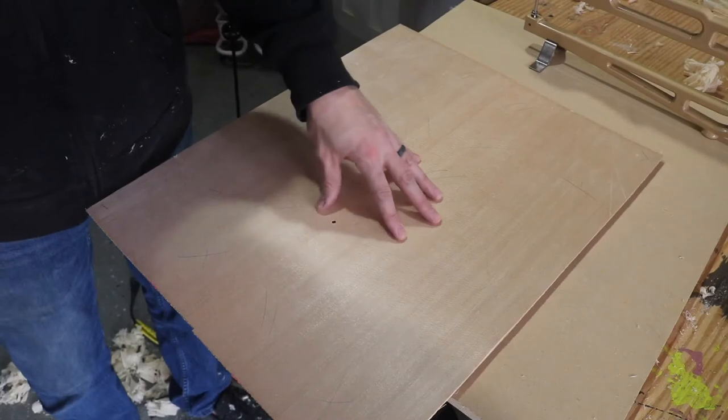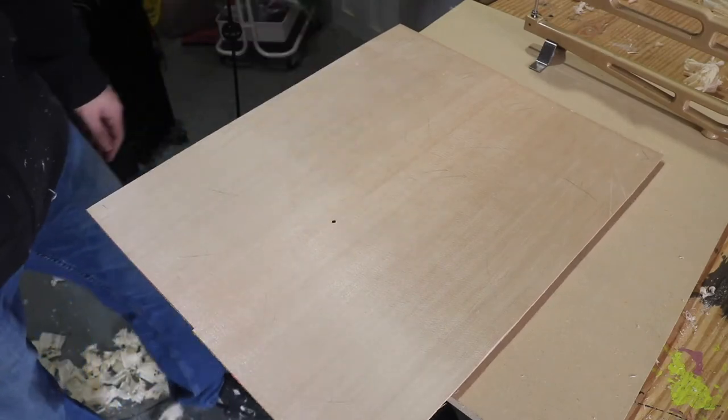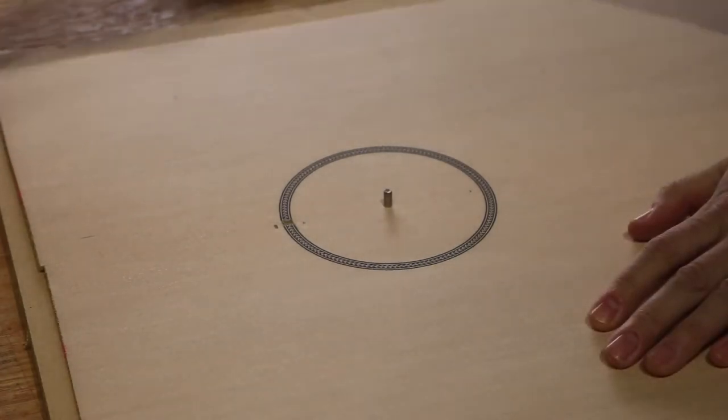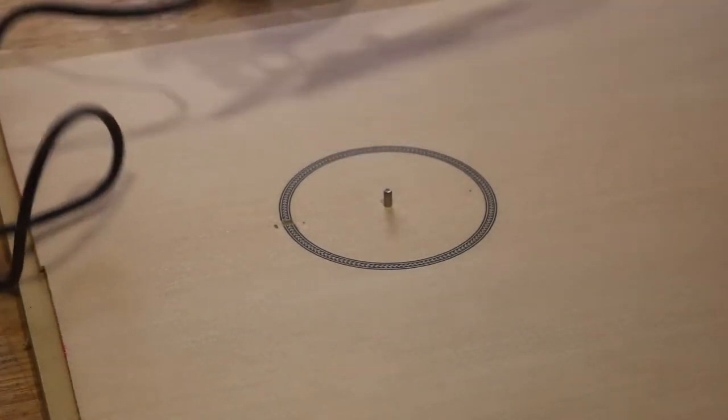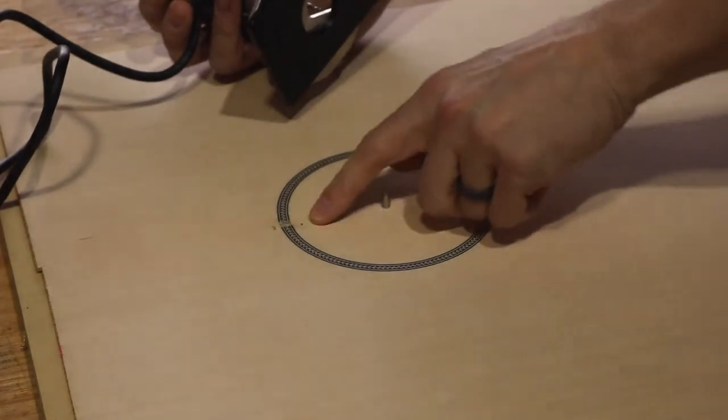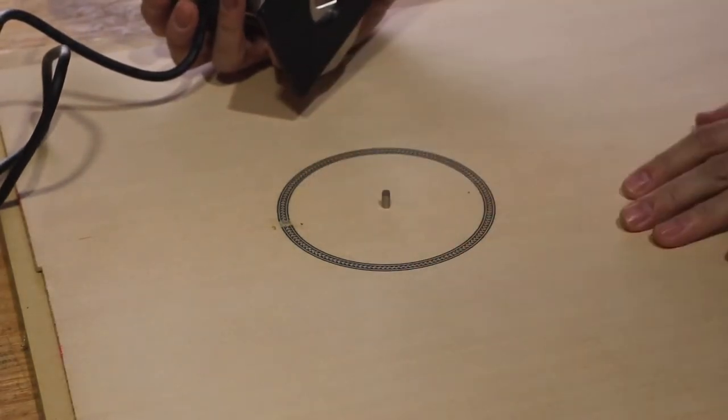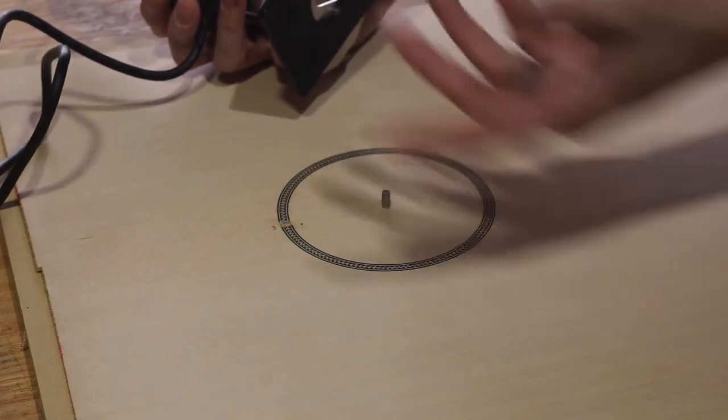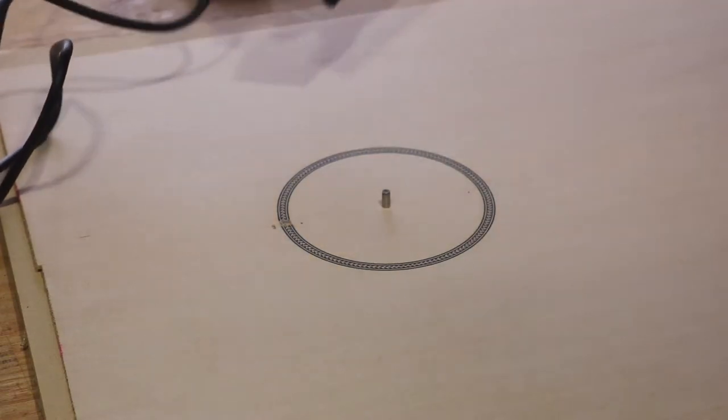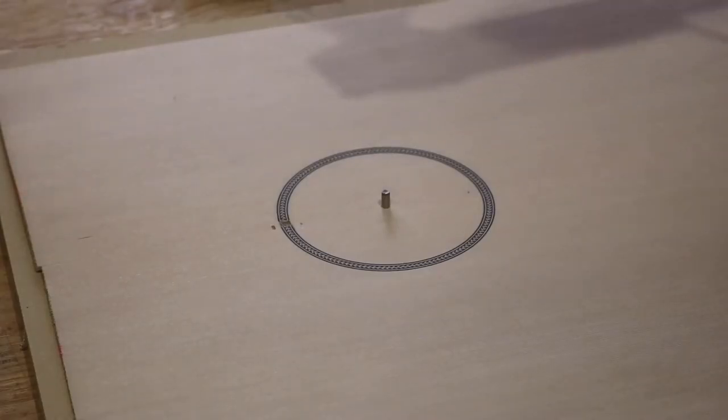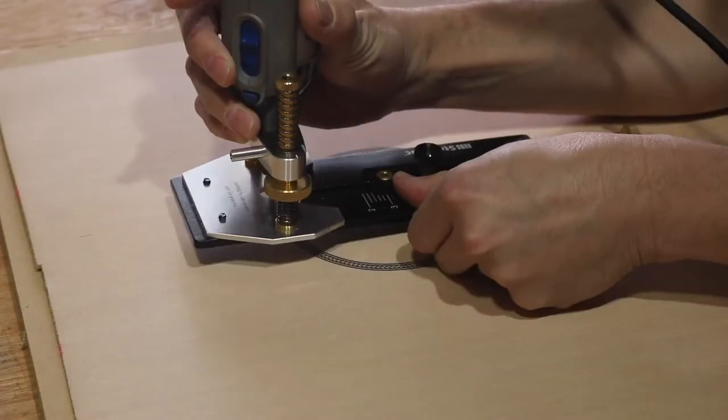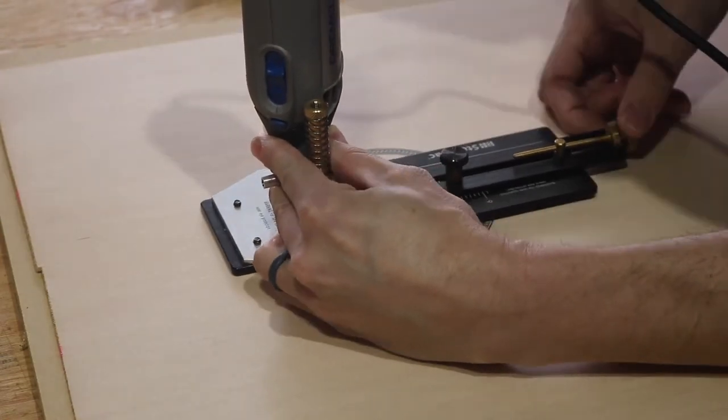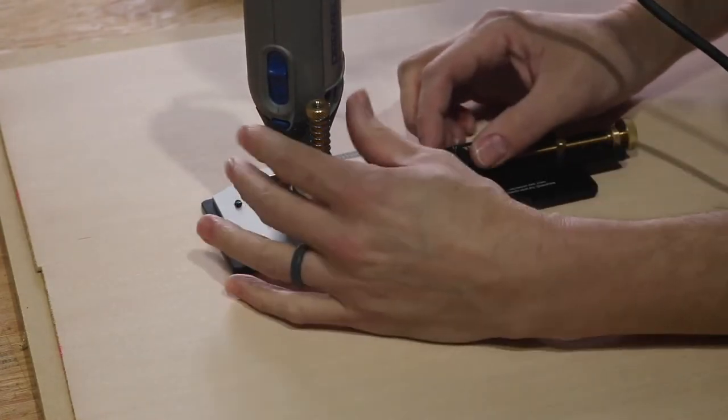Once I get that down to where I need it to be I'll come back to you. Now I'm ready to cut the sound hole with the same circle cutting jig. I've got it marked out where I need to cut it. I'm gonna make a first pass cut halfway through and probably flip it over and cut the rest of the way through on the backside just to prevent any tear out.